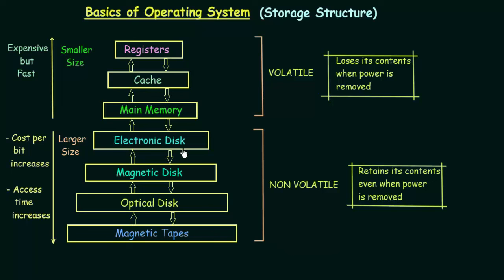Electronic disk can sometimes be made volatile as well as non-volatile. There are also different kinds of RAM, including a non-volatile RAM called NV RAM, which has a battery backup to retain its contents even when power is removed. Those are special cases, but basically registers, cache, and main memory are volatile, whereas secondary storage devices are non-volatile.